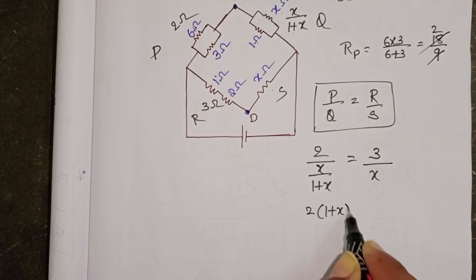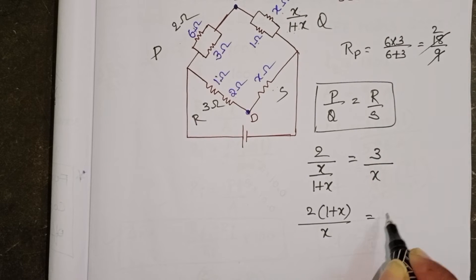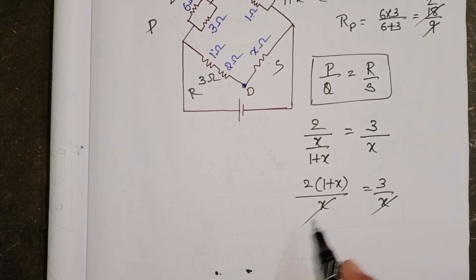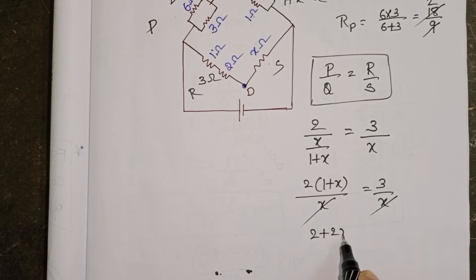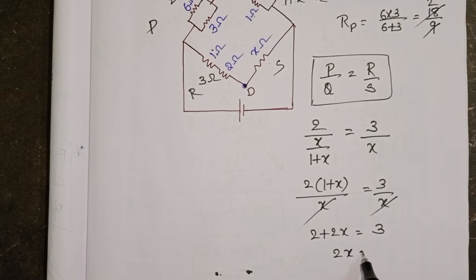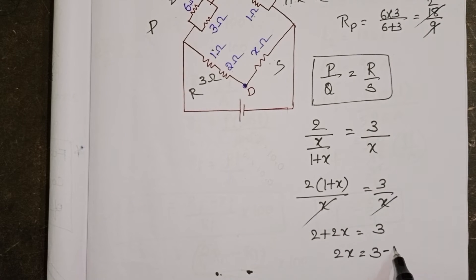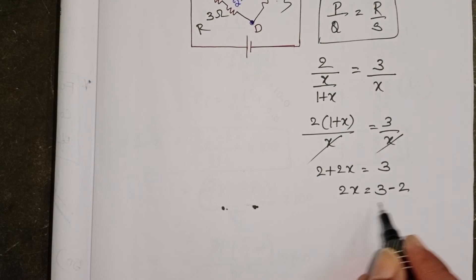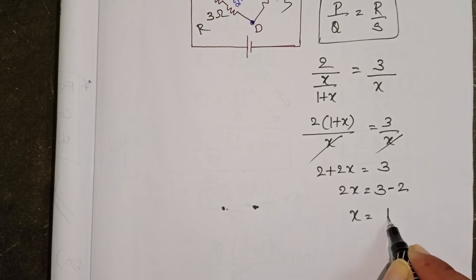2 into 1 plus X by X equals 3 by X. X cancels out. 2 plus 2X equals 3. 2X equals 3 minus 2. 3 minus 2 equals 1.